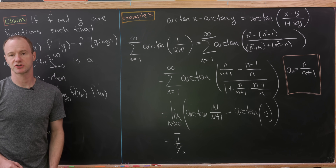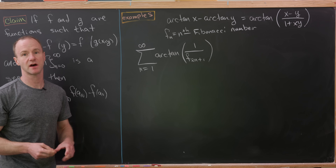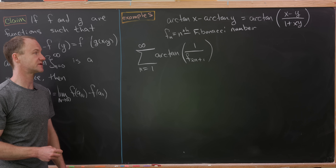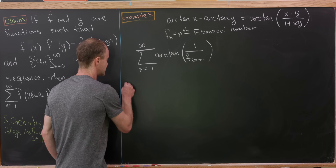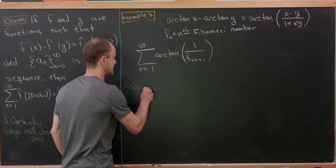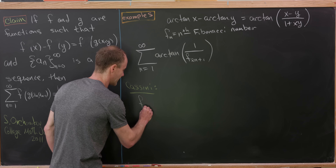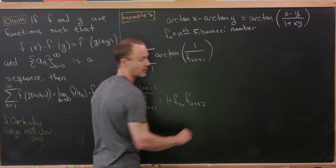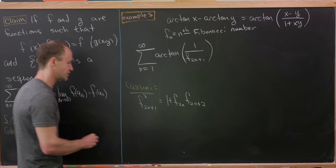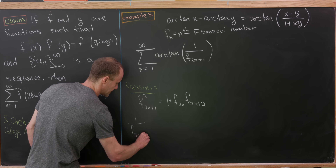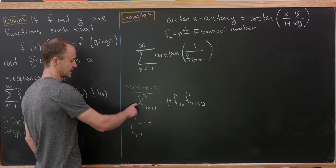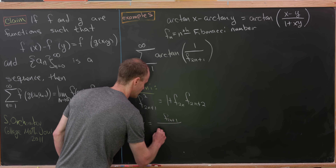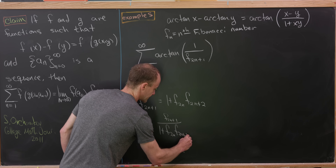Let's look at another example with the inverse tangent function. We're going to look at the sum involving the inverse tangent and odd-indexed Fibonacci numbers: the arctan of 1 over f sub 2n plus 1, where f sub n is the nth Fibonacci number. To handle this, we use Cassini's identity: f sub 2n+1 squared equals 1 plus f sub 2n times f sub 2n+2. Rearranging, 1 over f sub 2n+1 equals f sub 2n+1 over (1 plus f sub 2n times f sub 2n+2).